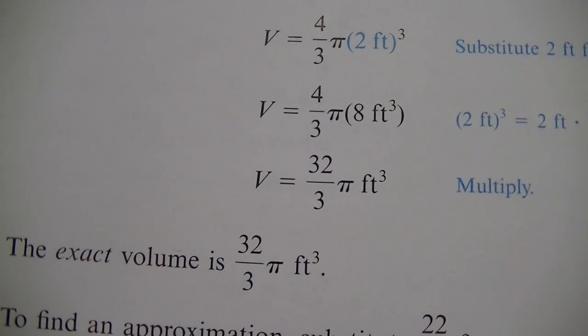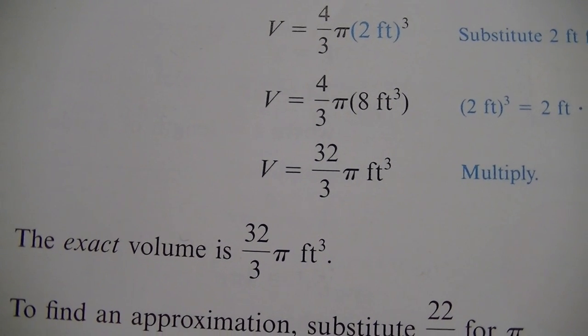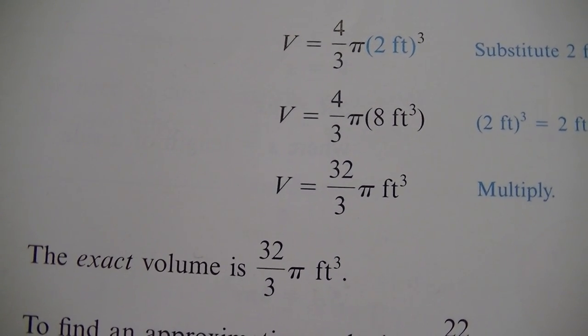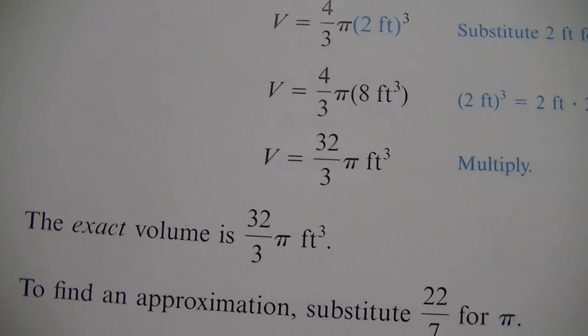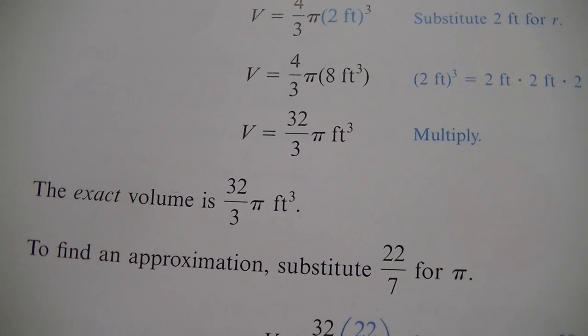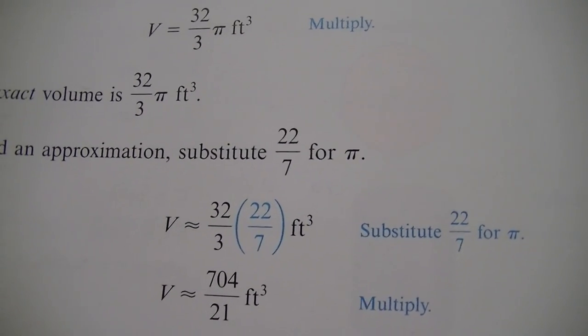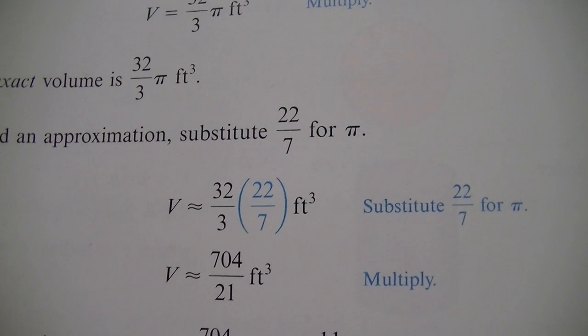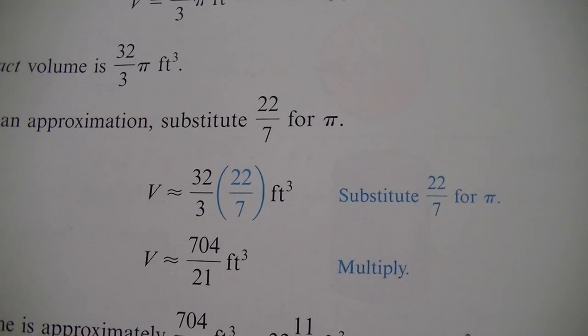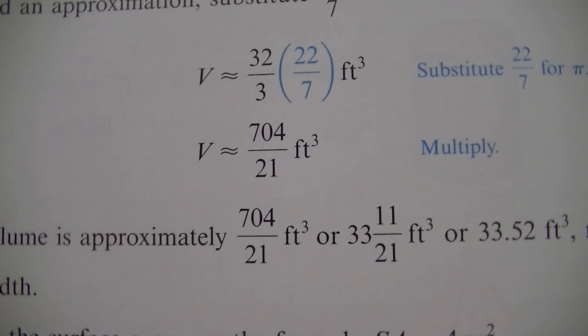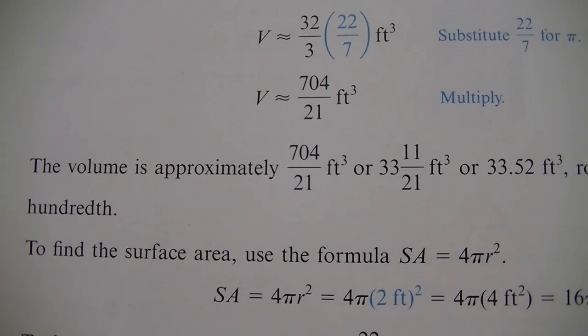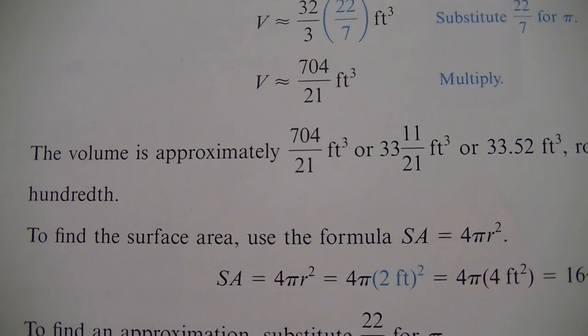The exact value is 32 over 3 times pi. Notice it's in feet cubed, because when we say 2 feet times 2 feet times 2 feet, feet times feet times feet results in feet cubed. All right. So we said put an approximation for pi as 22 over 7. So we're just going to substitute that in where the pi was. And we're going to multiply straight across the top. So 32 times 22 gives us 704. 7 times 3 on the bottom gives that 21 on the bottom. So that's how we get to 704 over 21. But anytime our top number is bigger than our bottom number, what do we have to do? We got to turn that into a mixed number.